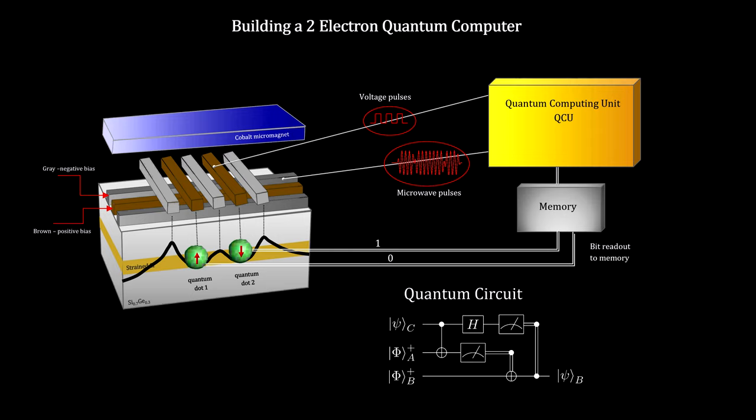Combinations of quantum gates are called quantum circuits. These combine to execute computer instructions. This is a 2 electron spin qubit quantum computer.